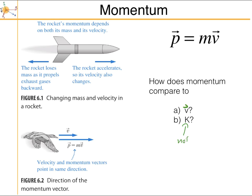Kinetic energy is not a vector — that's an important thing to note. It depends on momentum squared over 2m, which is the magnitude of momentum squared. So kinetic energy is a scalar that depends on the magnitude of momentum, and that's a bit different from momentum itself.